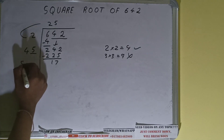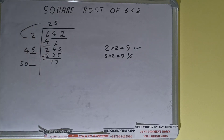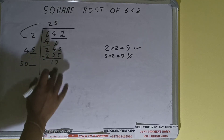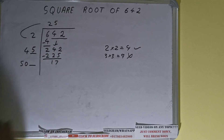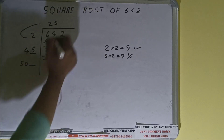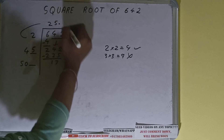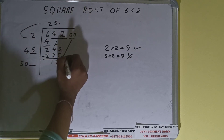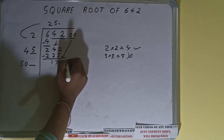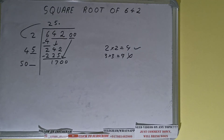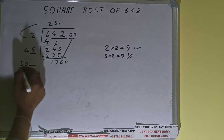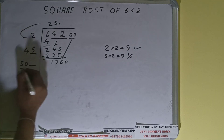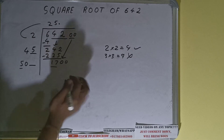Keep one digit extra. This number we need to make bigger, but we don't have any more pairs. So we'll put a decimal. Once we put a decimal we can make a pair of zeros, and the number will become 1700.